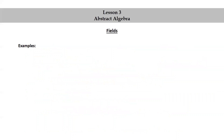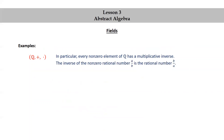Let's look at some more examples. The set of rational numbers together with addition and multiplication is an example of a field. In particular, every non-zero element of Q has a multiplicative inverse. The inverse of the non-zero rational number A/B is B/A. We can see this: A/B × B/A = AB/BA = AB/AB = 1/1 = 1. And similarly, B/A × A/B = BA/AB = 1/1 = 1.